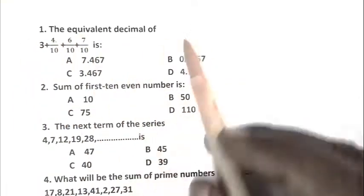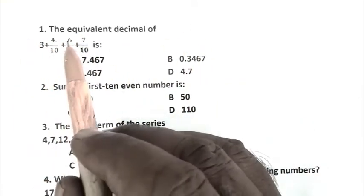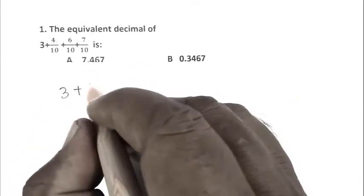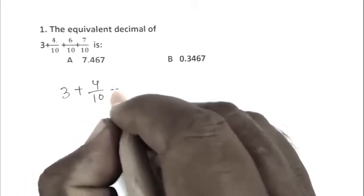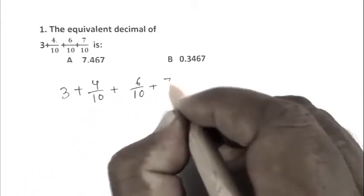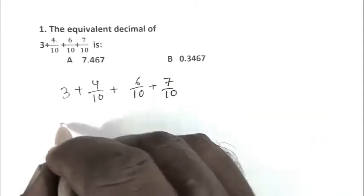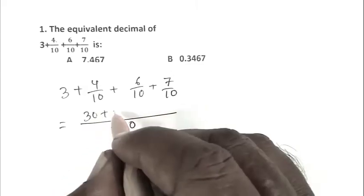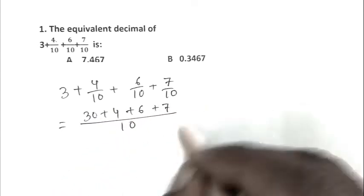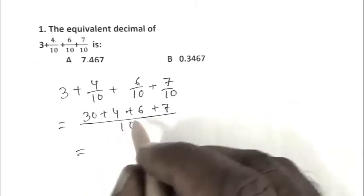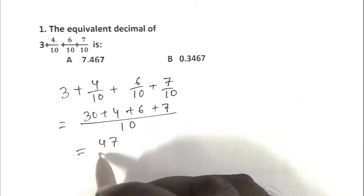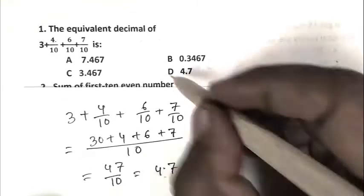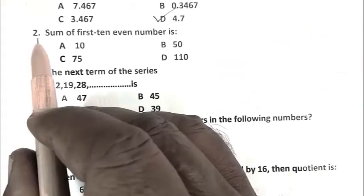Question number 1: The equivalent decimal of 3 plus 4 upon 10 plus 6 upon 10 plus 7 upon 10. First we take LCM 10, so 30 plus 4 plus 6 plus 7, that is 47 upon 10, that is 4.7. D is the right answer.